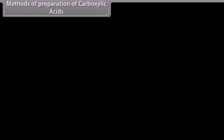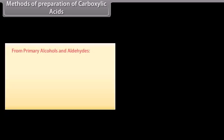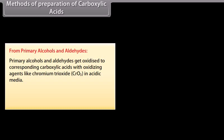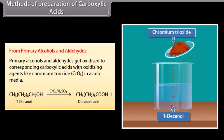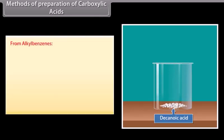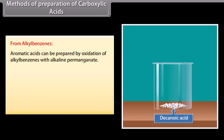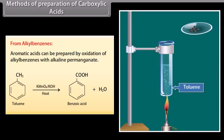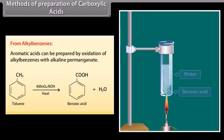Methods of preparation of carboxylic acids. From primary alcohols and aldehydes: primary alcohols and aldehydes get oxidized to corresponding carboxylic acids with oxidizing agents like chromium trioxide in acidic media. 1-Decanol reacts with chromium trioxide in acidic medium and forms decanoic acid. From alkylbenzenes: aromatic acids can be prepared by oxidation of alkylbenzenes with alkaline permanganate. Toluene reacts with potassium permanganate in alkaline medium and forms benzoic acid.